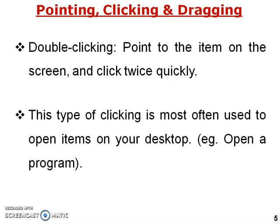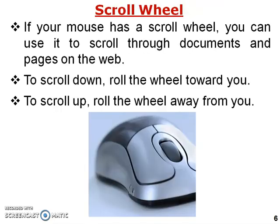Pointing, clicking, and dragging — double-clicking: point to the item on the screen and click twice quickly. That is the double-clicking process to execute any program. This type of clicking is most often used to open items on a desktop, for example to open a program.